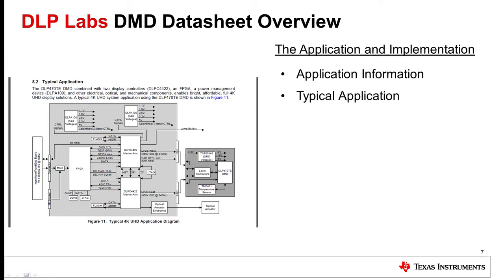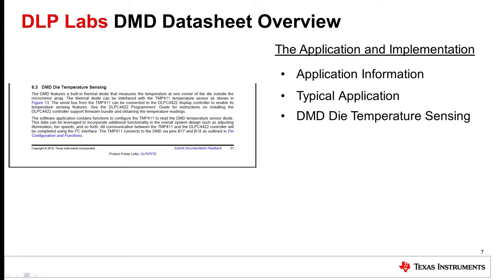This portion of the datasheet also contains design requirements and design procedure information. The last portion of section 8 describes DMD die temperature sensing. Some DMDs have a built-in thermal diode that measures the temperature at one corner of the DMD. This section covers how to connect a temperature sensor, such as the TI TMP411, to the temperature diode.